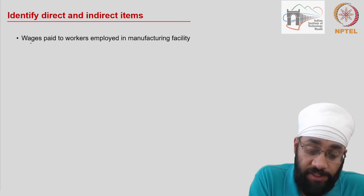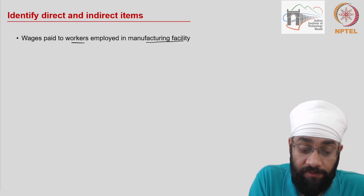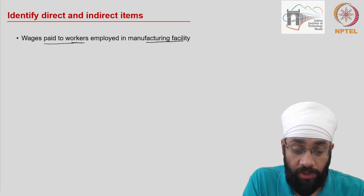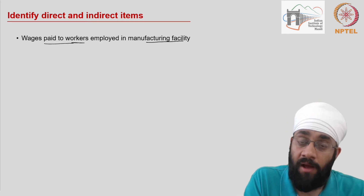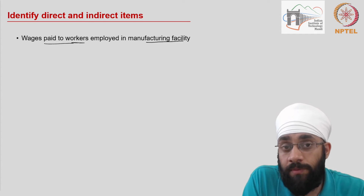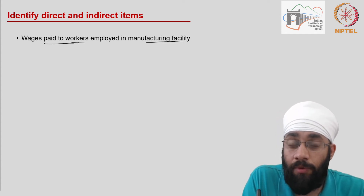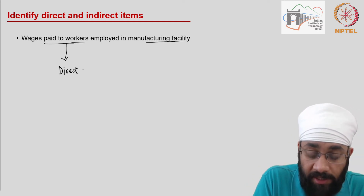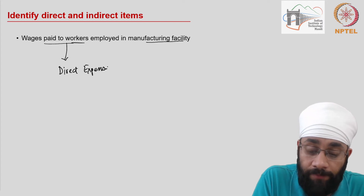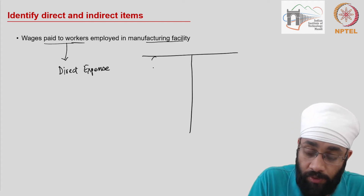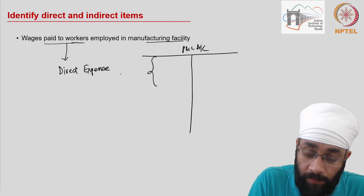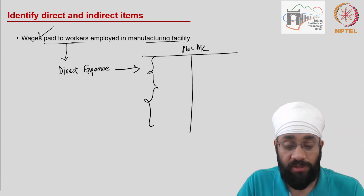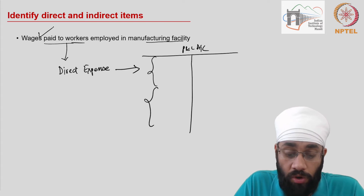Next, we have wages paid to workers employed in a manufacturing facility. In a manufacturing plant there is a lot of labor working, and the wages being paid directly contribute to manufacturing the product — to getting it ready to be sold. Therefore, this is categorized as a direct expense, as it directly contributes to the cost of the product. In the profit and loss account, this will be shown in the first section.